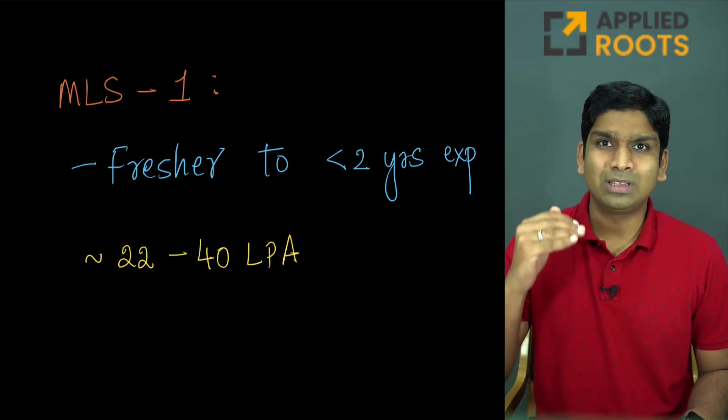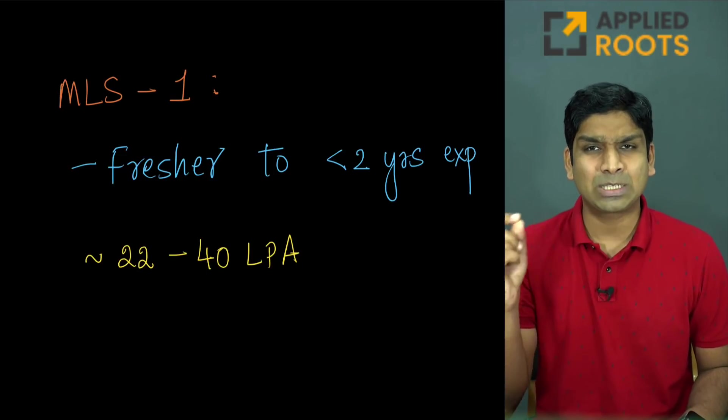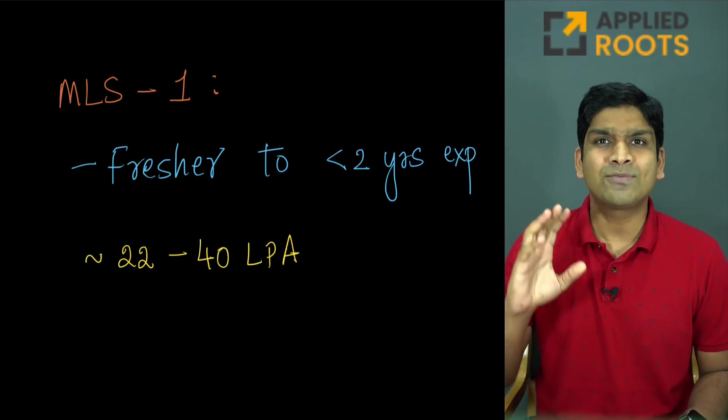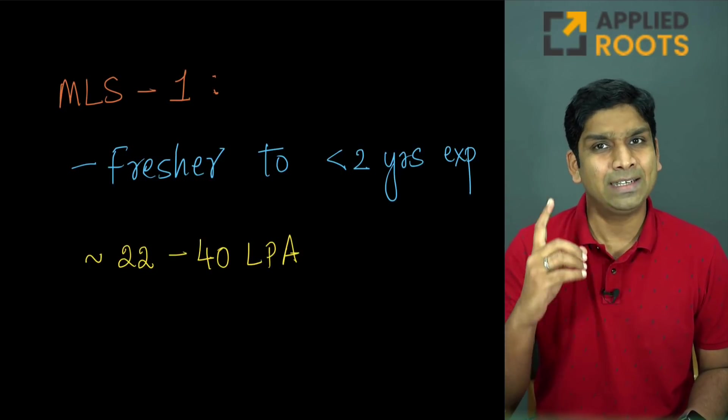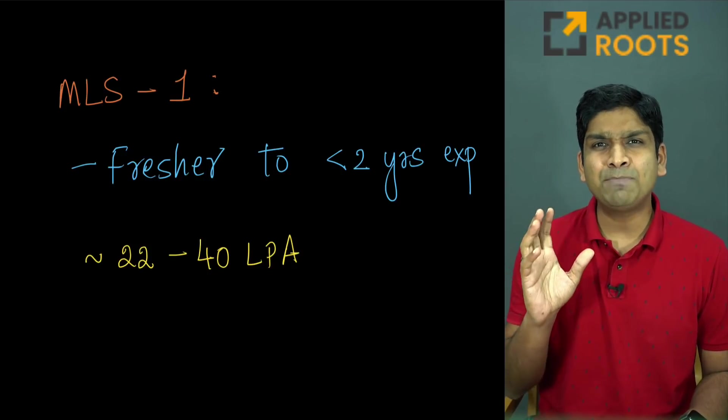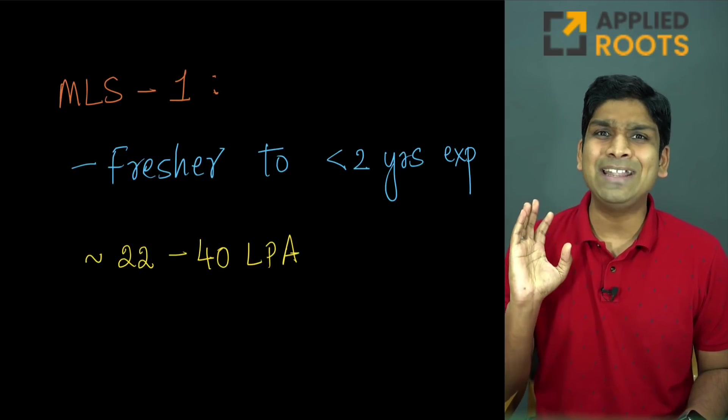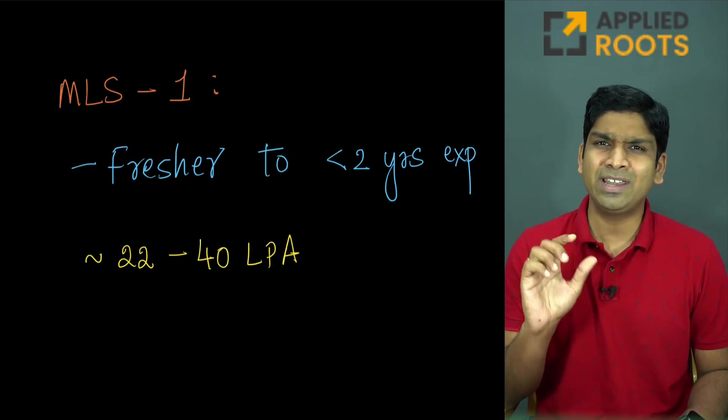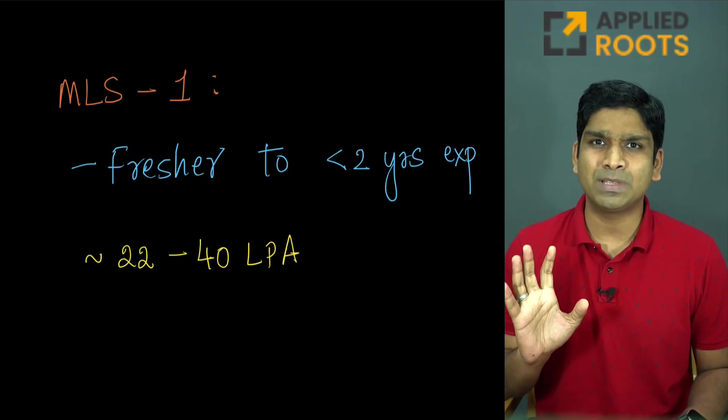First let's go to the machine learning scientist one. It's often written as MLS-1 or machine learning engineer one roles. Typically freshers who have strong foundational skills get into these machine learning scientist or applied scientist one roles, and typically people between zero to two to three years experience get into these entry level machine learning scientist roles, and their compensations in India typically range between 22 to 40 lakhs per annum.